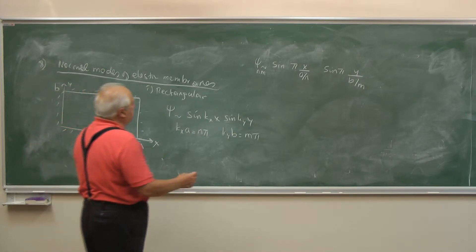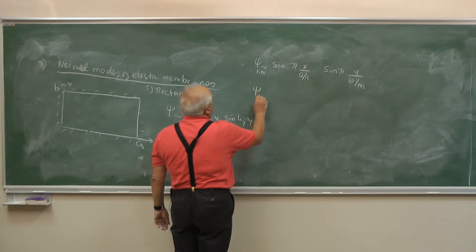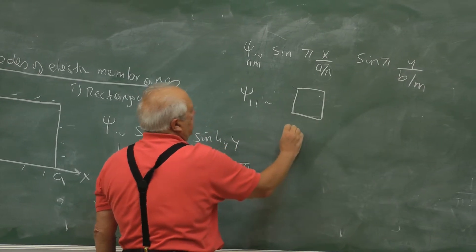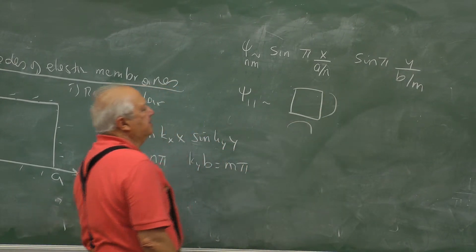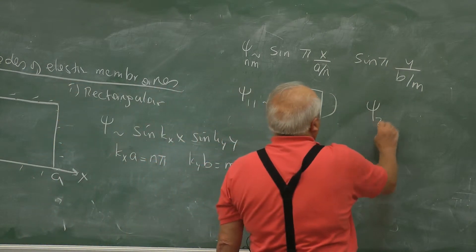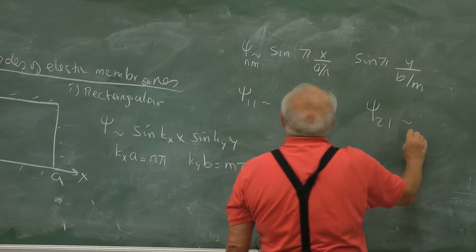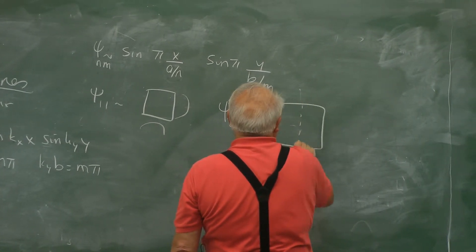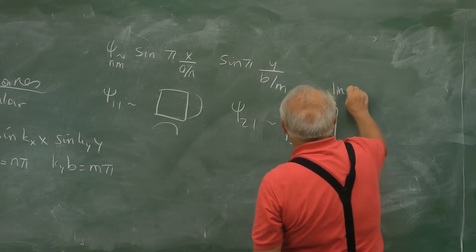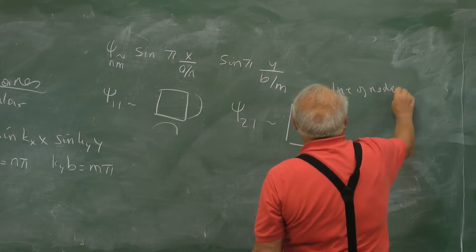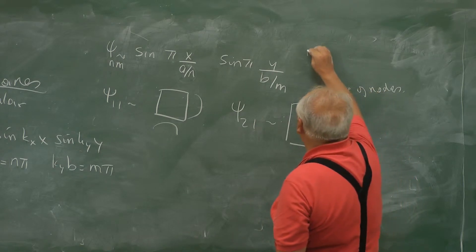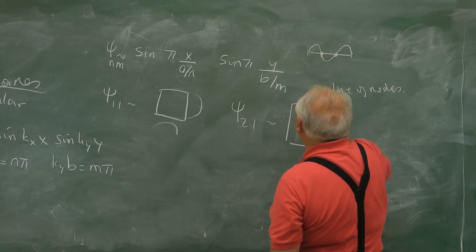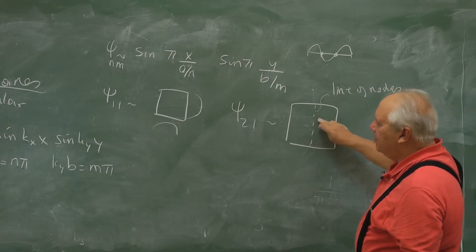For example, psi(1,1) is the fundamental in both directions. For psi(2,1), we divide the horizontal axis by 2. We call this a line of nodes. In the one-dimensional string we discussed, we had nodal points. Here, because of the rectangular geometry, we don't have points but lines.